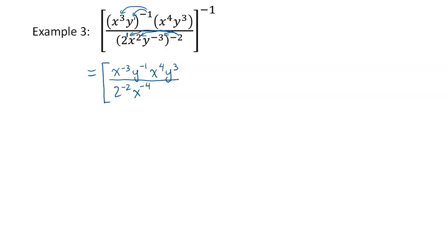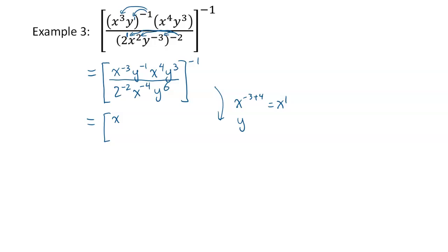Two times negative two gives X to the power of negative four, and negative two times negative three gives Y to the power of positive six. All of that is raised to the power of negative one. Now applying the product rule to the numerator: negative three plus four gives X to the power of one, which is just X. And Y to the negative one plus three gives Y to the power of two. So we have X times Y squared divided by two to the power of negative two times X to the power of negative four times Y to the power of six.